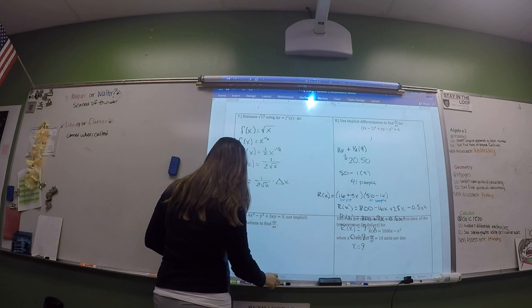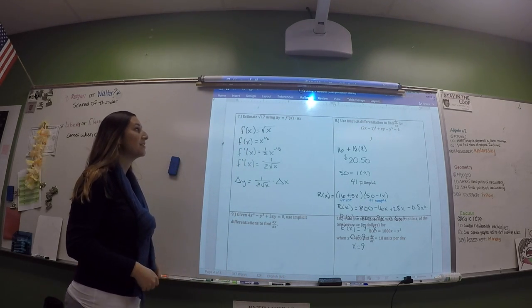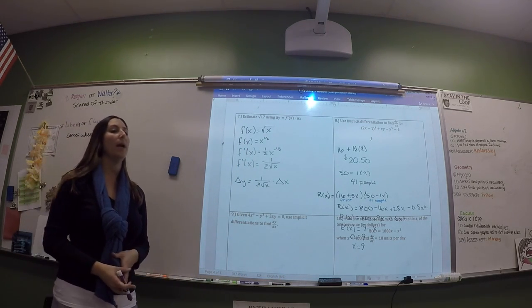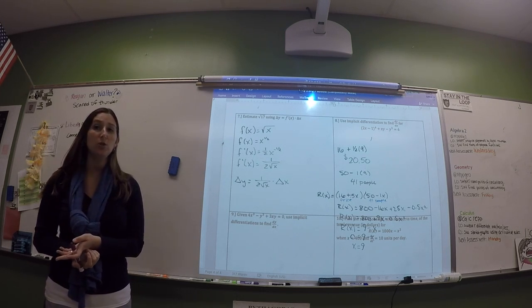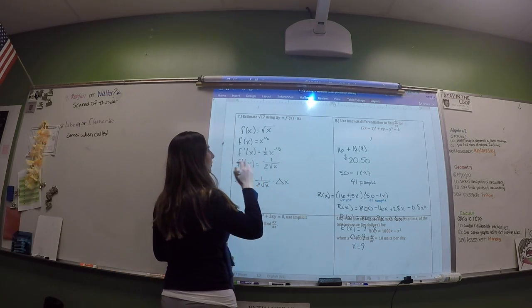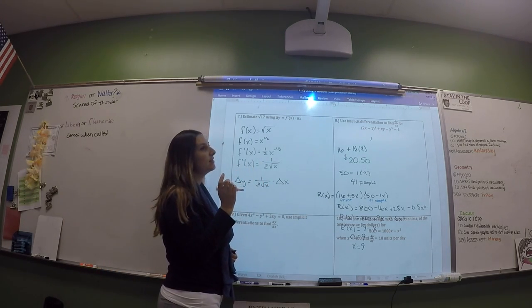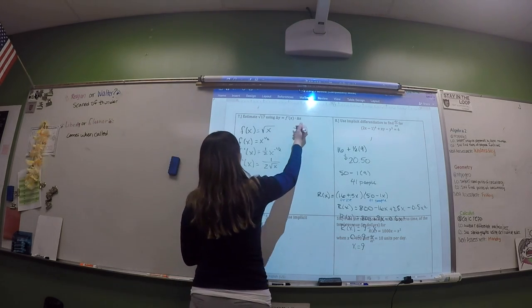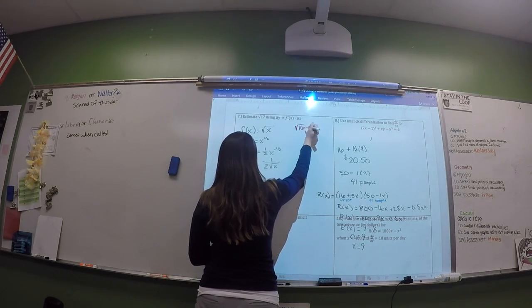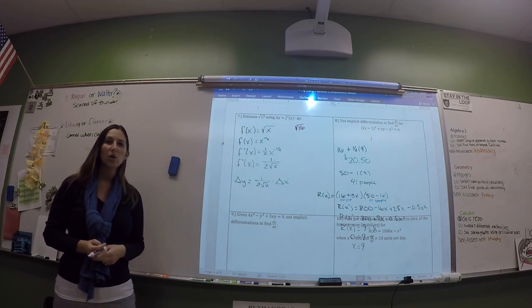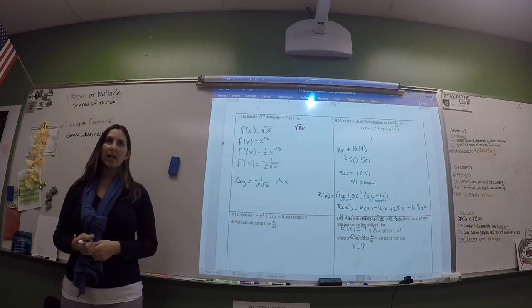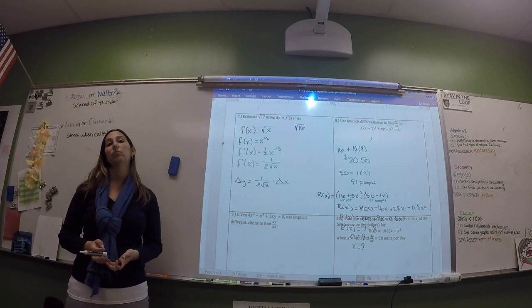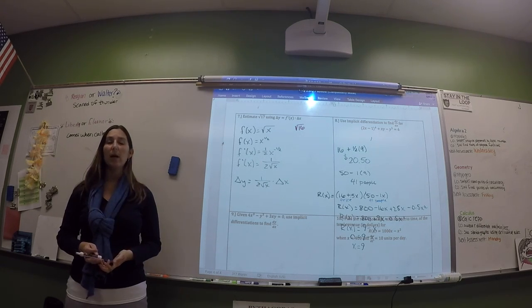We need to compare to something close by that we know. If we're estimating the square root of 17, we use the square root of 16 because it's close. If it was 29, we'd pick 25 — it would be less accurate since it's farther away. If it was 37, we'd pick 36.